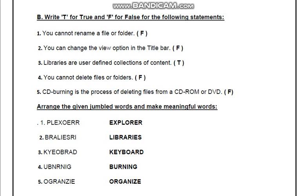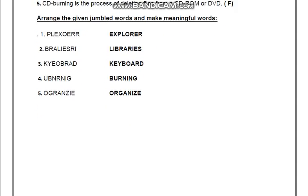Next jumbled word letters B, R, A, L, I, B, R, A, D ko arrange karenge — answer humara Library banta hai. Next letters B, R, U, R, N, I, N, G ko arrange karenge — answer humara Burning banta hai. Next letters O, R, G, A, N, I, Z, E ko arrange karenge — answer humara Organize banta hai.